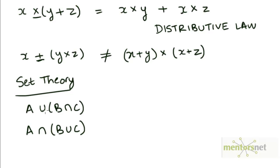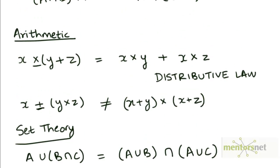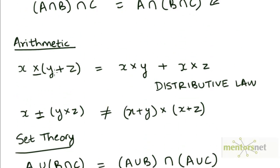So A union (B intersection C) can be written as (A union B) intersection (A union C). Just as we wrote earlier, x times (y+z) equals x times y plus x times z.